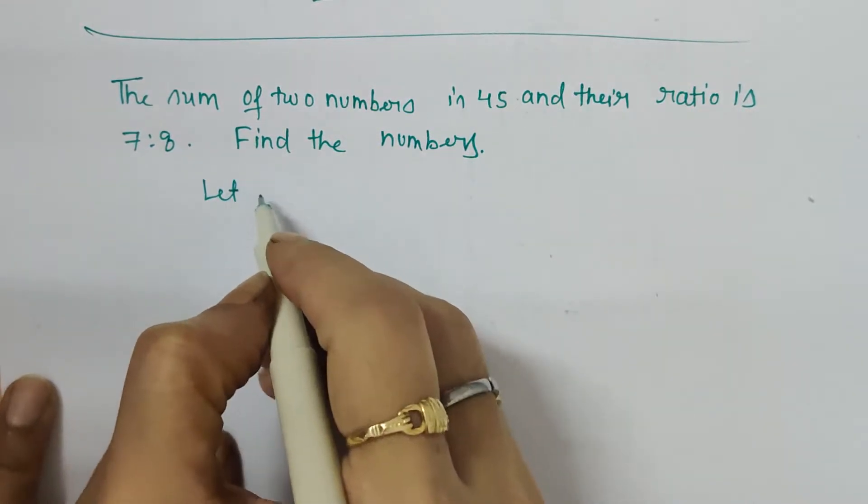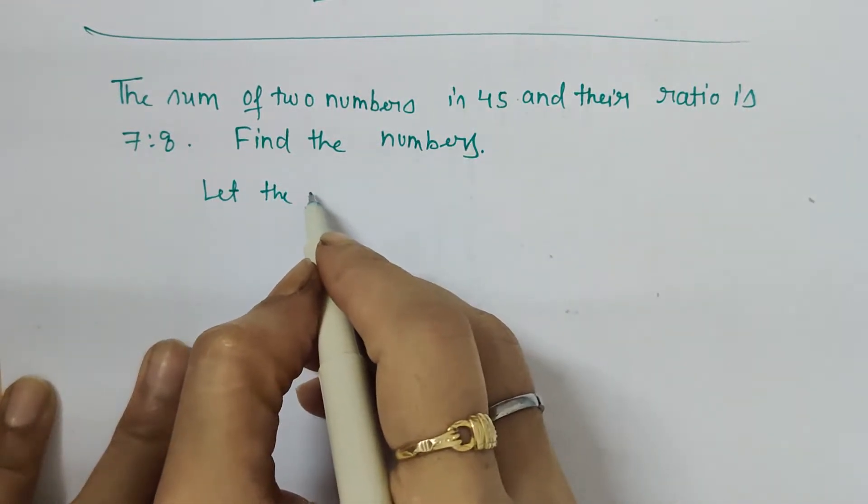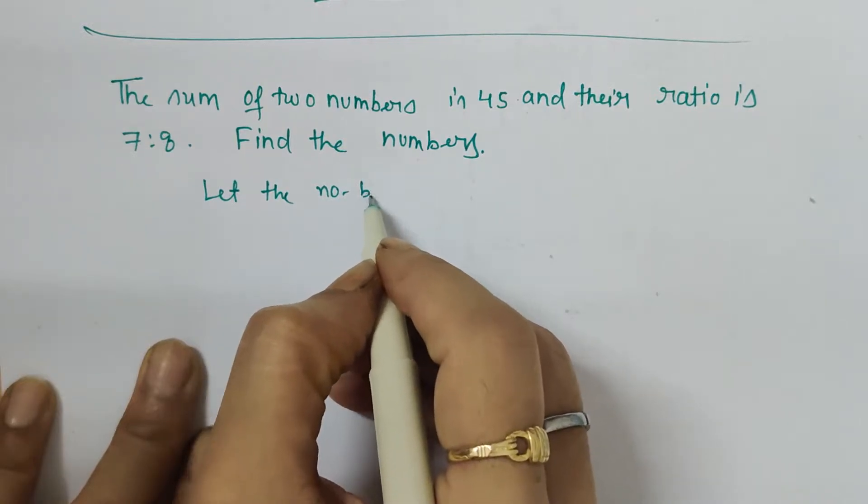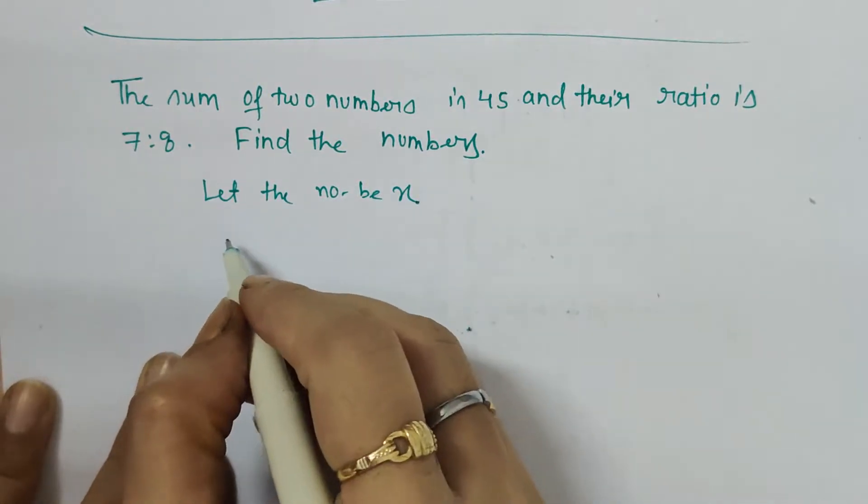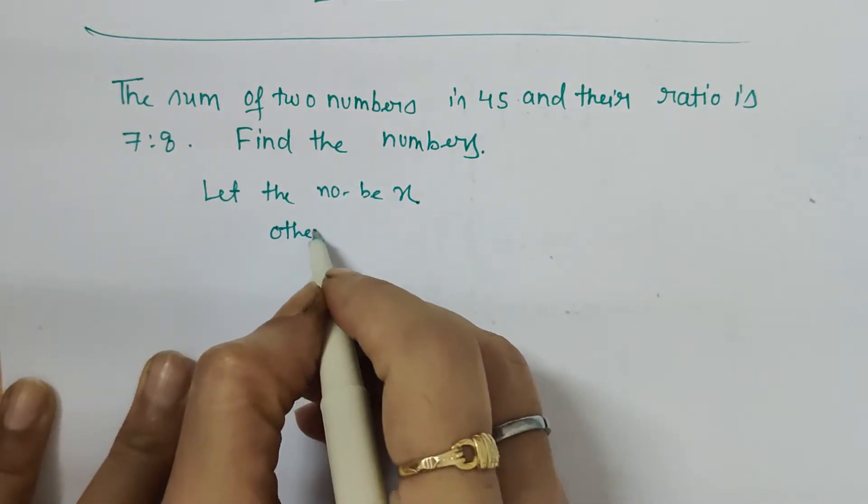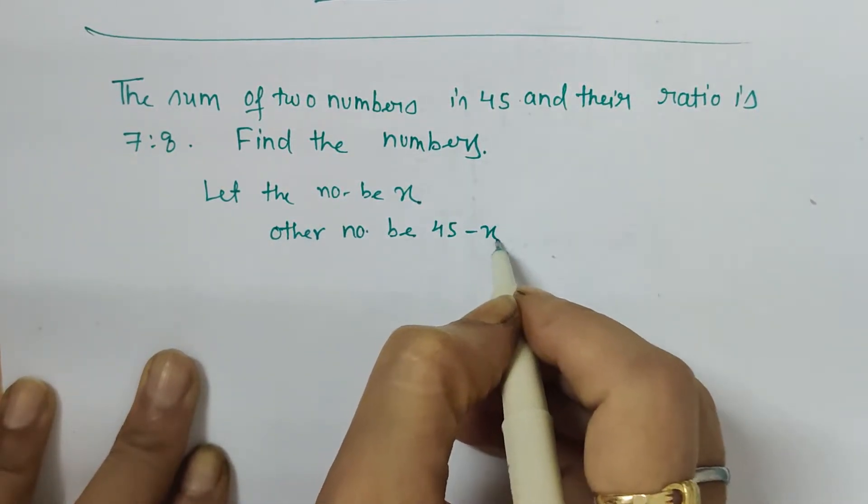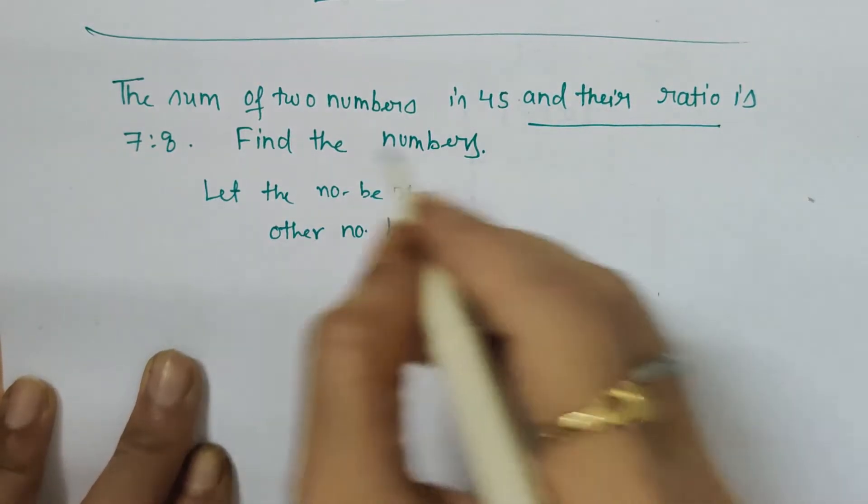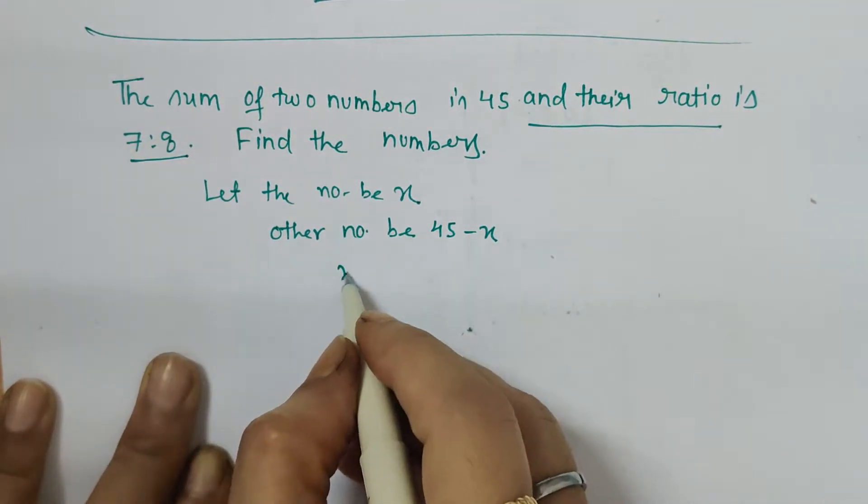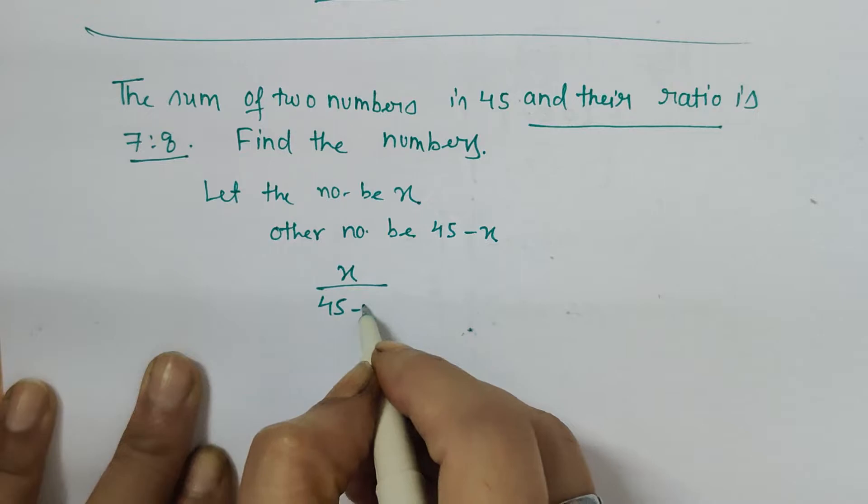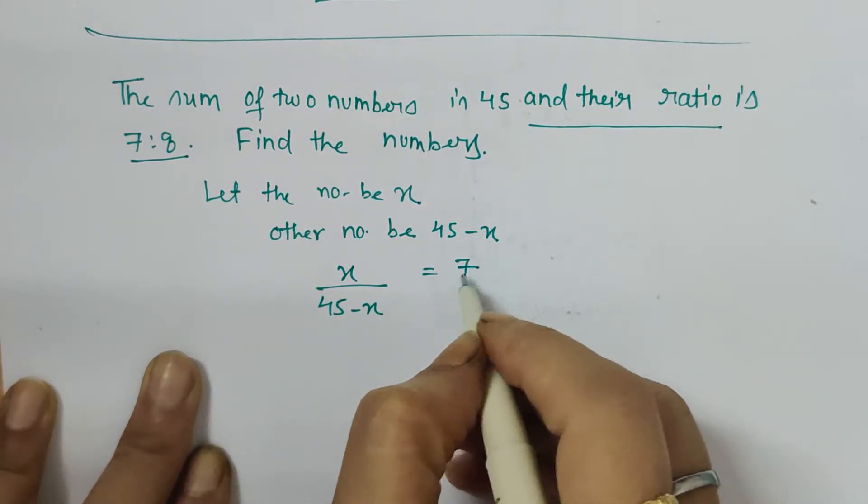So if one number is x, then the other number would be 45 minus x. And it is given that the ratio is 7 is to 8, that means x upon 45 minus x is 7 upon 8.